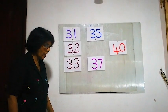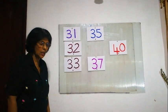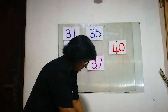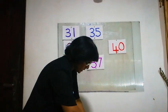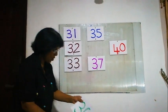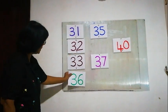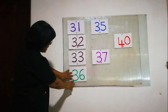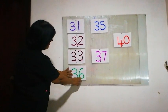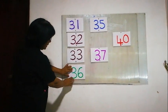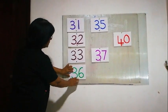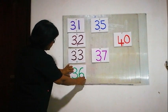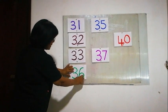Now we have to find the number 34. Is this number 34? Is this 34? 3, 6 — is it correct? No, this is wrong. 4 must come here.